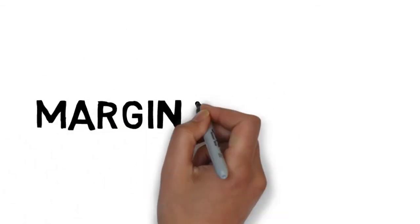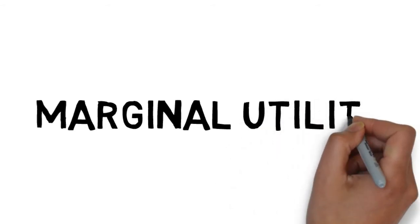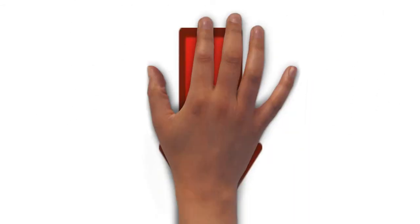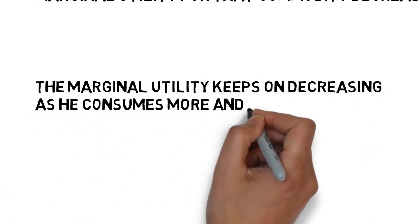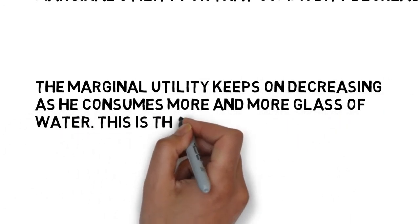In the above example, an increase in utility when Den consumes one more glass of water is the marginal utility derived from that additional glass of water. Marginal utility keeps on decreasing as he consumes more and more glasses of water. This is the law of diminishing marginal utility.